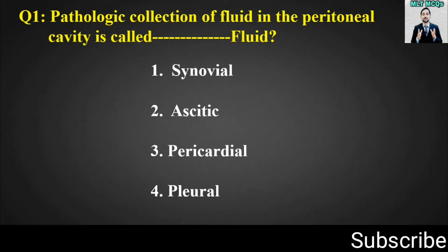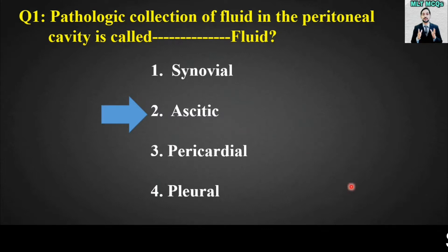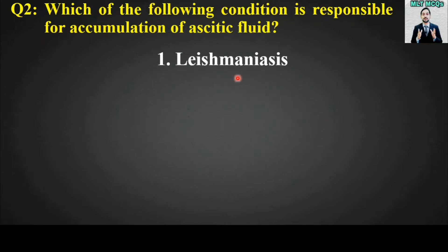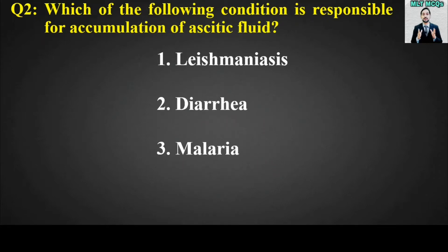The right answer for this MCQ is option number two: ascitic. MCQ number two is: which of the following condition is responsible for accumulation of ascitic fluid? Options are: leishmaniasis, diarrhea, malaria, or tuberculosis.